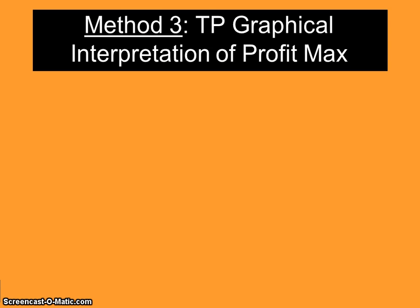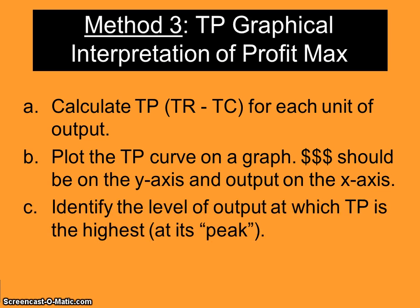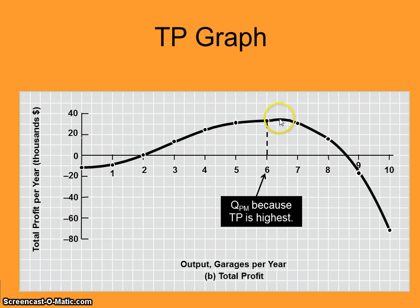Method number three is to graph the total profit curve and look for the highest point on the curve. Calculate total profit, graph that total profit curve, and identify where it peaks. In the Al's Garage example, total profit actually peaks a little past six garages — but you can't sell half a garage. So if total profit is highest between two levels of output, you backtrack to the last whole number. Total profit is higher at six than at seven, which is why you go back to six.